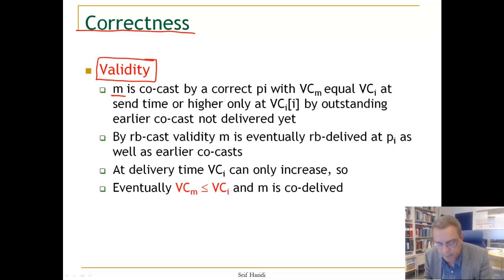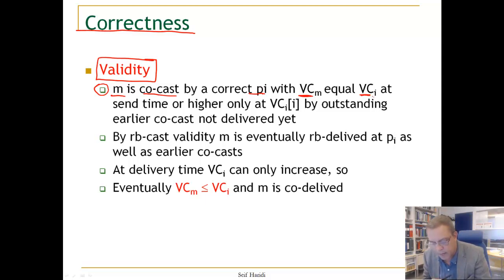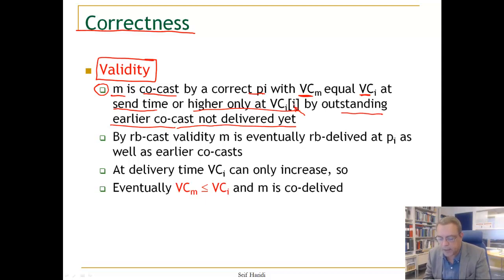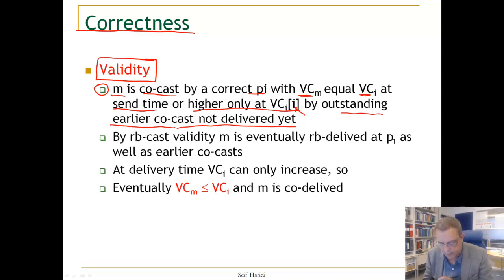We have message M that is causally broadcast by some correct process PI with a vector clock VCM, which is equal to the local vector clock at send time, or higher only in the field of that process by outstanding earlier causally broadcast messages that have not yet been delivered. We increase this to guarantee that messages are delivered in the same order that they were broadcast at the same process. So VCM is equal or only higher for outstanding messages not yet delivered.